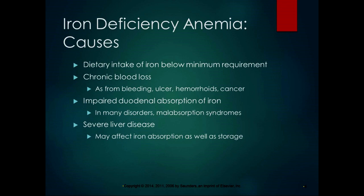Lots of different things can cause iron deficiency anemia. Dietary intake of iron below the minimum requirement is one cause — eat your leafy greens. Dietary intake is really important during adolescent growth spurts, during pregnancy and breastfeeding, because your needs increase. Only about five to ten percent of ingested iron is absorbed, but this can increase to 20% when you already have a deficit.